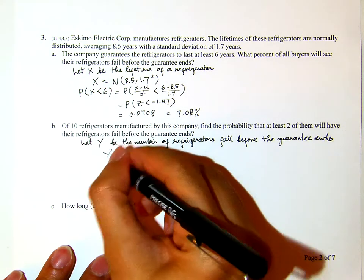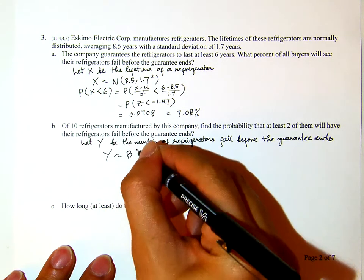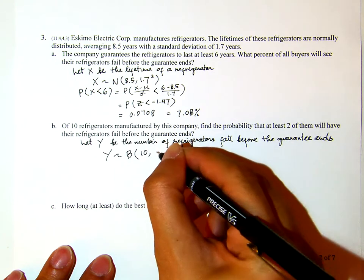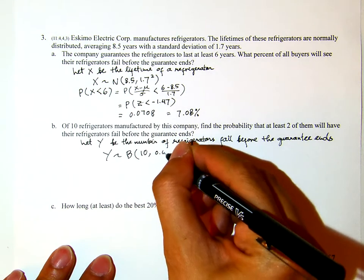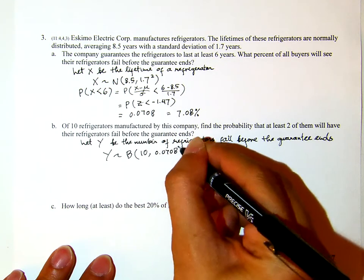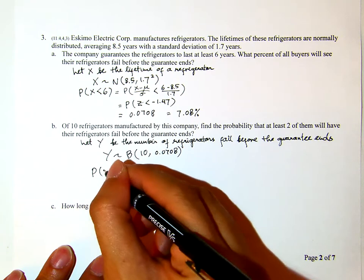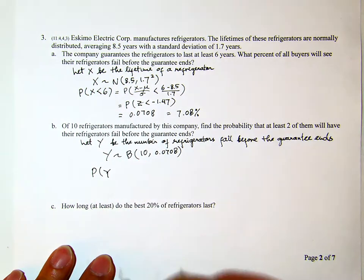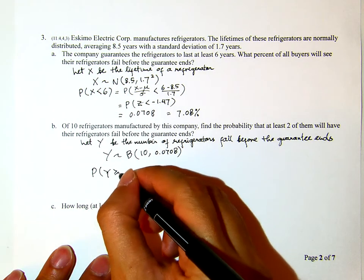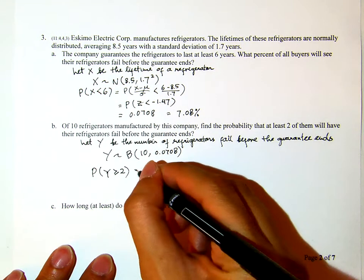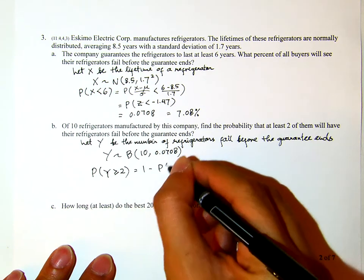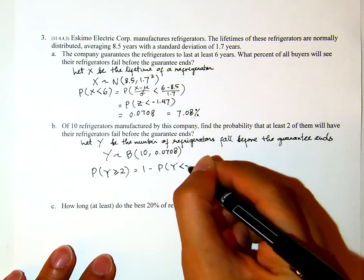Y will be binomially distributed with number of trials 10 and probability of failure 0.0708. The question is: find the probability that Y is at least 2. The probability that Y is at least 2 equals 1 minus the probability that Y is less than 2.